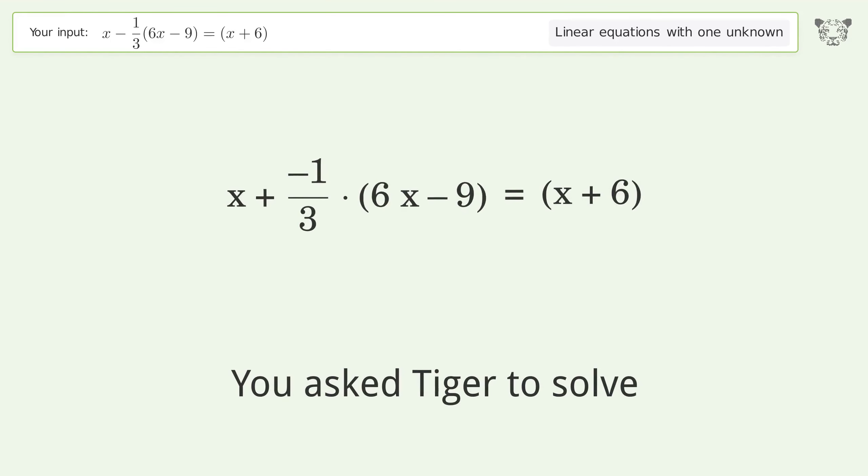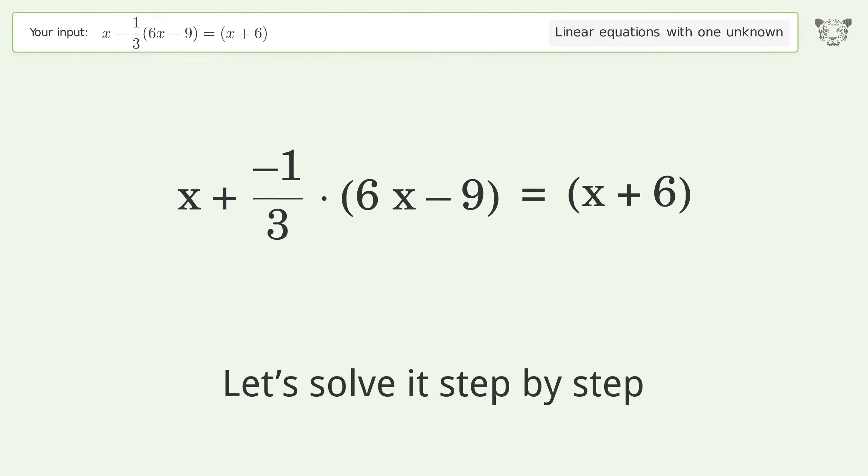You asked Tiger to solve this. It deals with linear equations with one unknown. The final result is x equals negative 3 over 2. Let's solve it step by step.